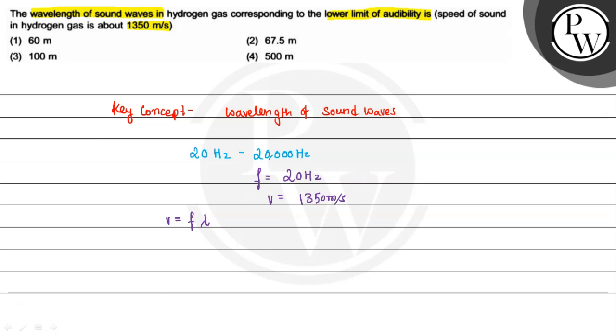So the value of lambda will be v upon f. So velocity we have 1350 divided by 20. The zero will cancel, so the value is 67.5 meters.